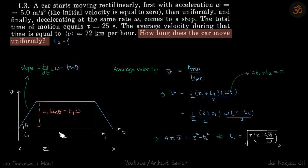So we will solve it with this graph. The slope of this v-t graph is acceleration, so dv/dt is equal to w is equal to tan theta. So if this is tan theta, and let's say this is t1, then this height is t1 tan theta, or t1 w.